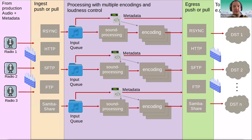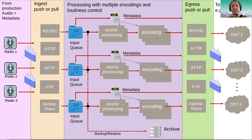This all happens for all stations in parallel. Each station has its own input queue, its own processing, and its own configuration. So if you have different needs on different radio stations, you can use all that flexibility. And there's an archive right inside Xtreme where you can archive the audio and metadata files, which comes in handy if you change your mind later.